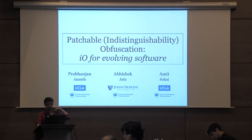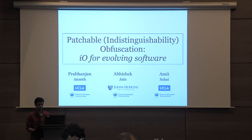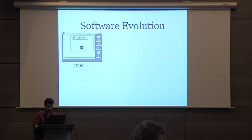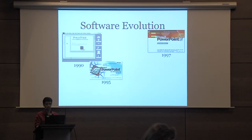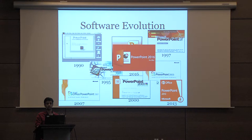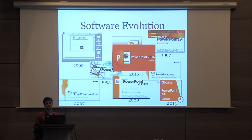I'm going to talk about patchable indistinguishability obfuscation, which is called IO for evolving software, and this is joint work with Abhishek and Amit. Every software in its lifetime undergoes numerous changes, and these changes are modeled as patches, which the company regularly publishes on their website. The users can download these patches and apply them to their local copies of software.